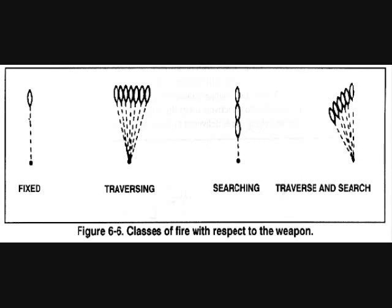C3 — searching fire. Searching fire is fire distributed in depth by successive changes in elevation. The gunner selects successive aiming points in depth; changes made at each aiming point depend on the range and slope of the ground. C4 — traversing and searching fire. Traversing and searching fire is fire distributed in width and depth by successive changes in direction and elevation. Combining traversing and searching provides good coverage of the target, with adjustments made in the same manner as for traversing and searching fire individually.